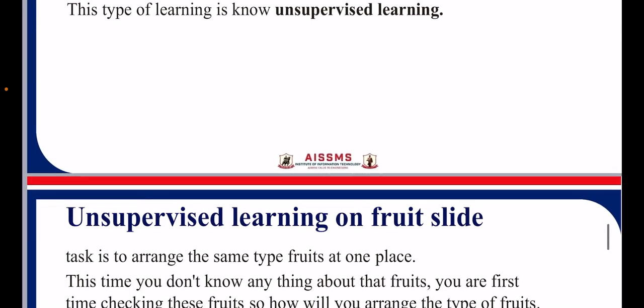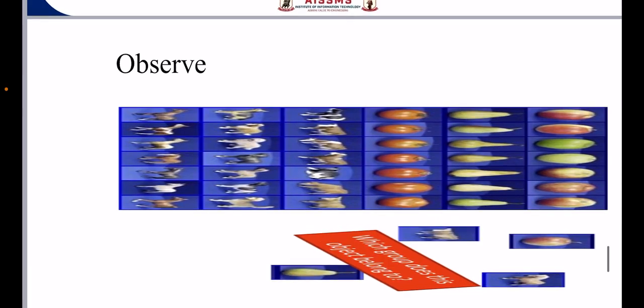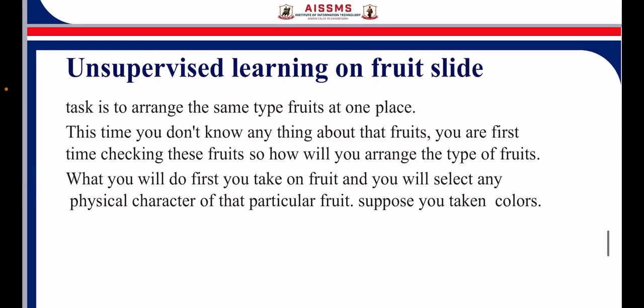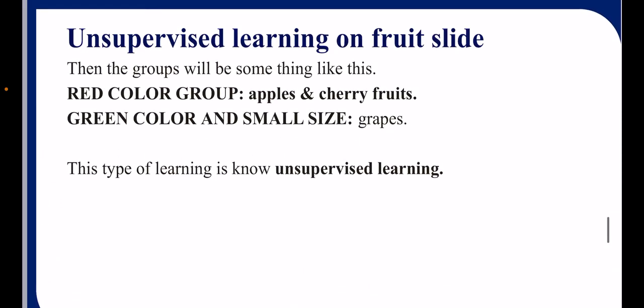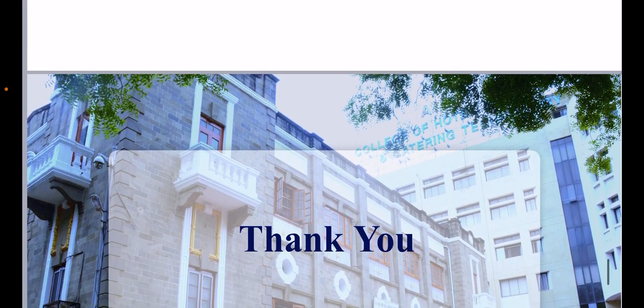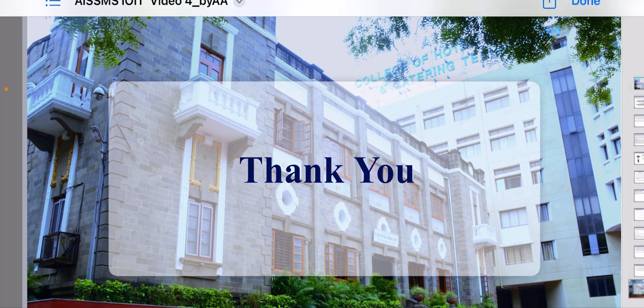For example, when we give n number of fruits to a machine learning model, it observes all the fruits and separates the data into various clusters. We are not controlling how the model clusters — it can cluster according to color or according to the size of a particular fruit. In this way, in unsupervised learning, the machine learning model has the ability to cluster data by observing. Thank you.